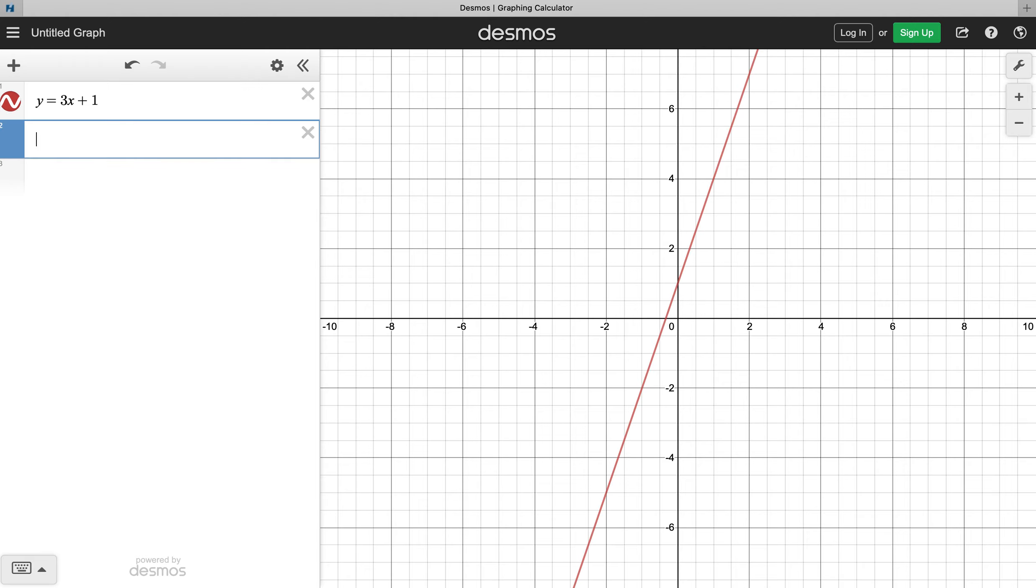So let's hit enter and let's get another equation. How about 3x minus 2? And if you notice, these two lines run parallel to each other. Parallel lines are lines that are in the same plane and never intersect each other.